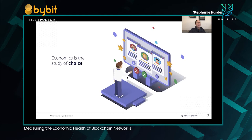We view these as questions of economic health. Economics has many different definitions, but we really think about it as the study of choice. When you're thinking about economics, and especially microeconomics, what you're thinking about is how are people who are using your blockchain platform interacting with the system? What decisions are they making? And are these decisions in line with what you want them to do? These are all choices that they're making, and economics studies the reason why we make these choices.